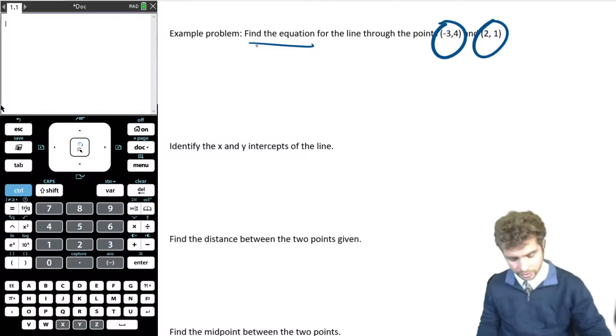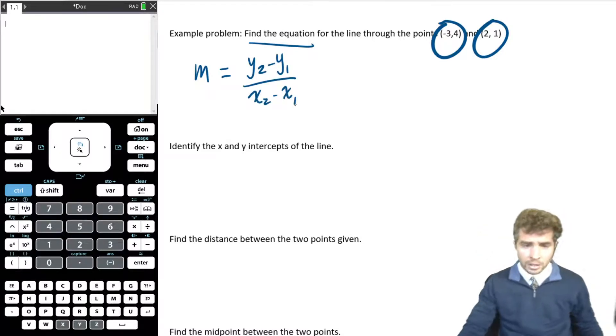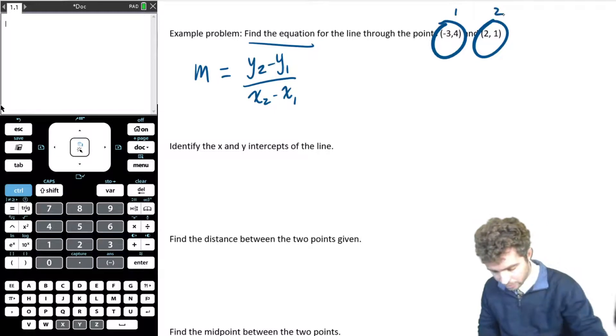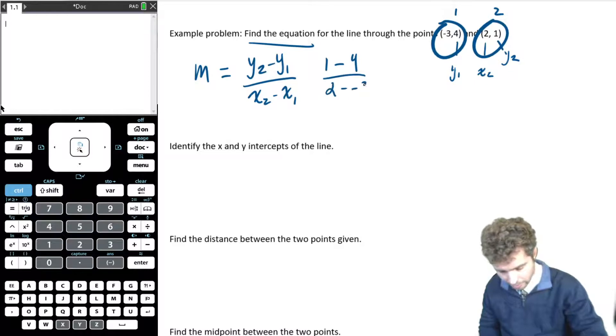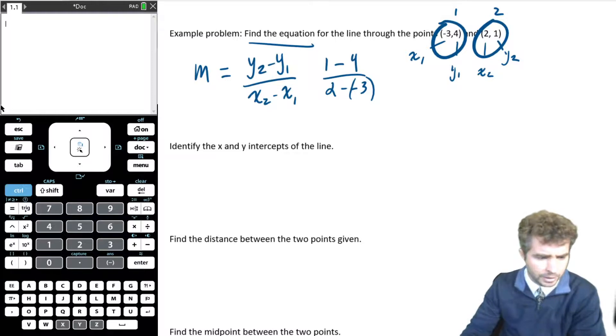Okay, the first step to doing this is finding the slope. So m, the slope is y2 minus y1 over x2 minus x1. So for our equation, let's say this is point 1 and this is point 2, so y2 is going to be 1, right? And that's x2. So it's going to be 1 minus 4, because that's the other y, that's y1, over 2 minus negative 3. And I'm going to put that in brackets. That's our x1, right? So I'm just going to plug that right into my calculator, and I'm going to get the little fraction button here.